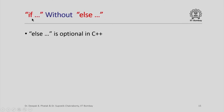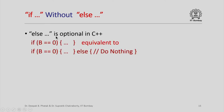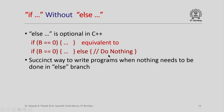C++ also allows you to write if without the else — the else is optional. Writing an if statement without else is equivalent to having an else branch that does nothing. This is a succinct way to write programs when nothing needs to be done in the else branch.